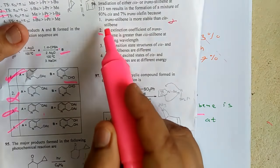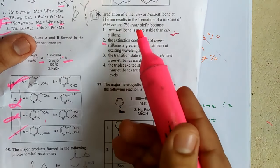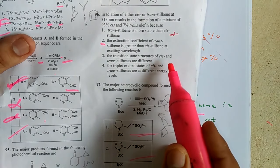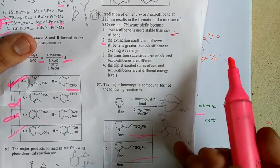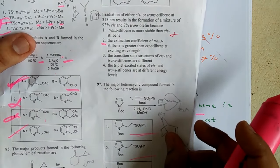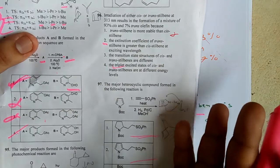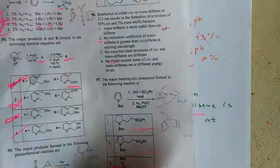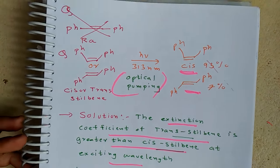Other options are less relevant: trans-stilbene being more stable than cis doesn't directly explain this result; the difference in transition state structures is not applicable; and the triplet excited state requires sensitizers like benzophenone which are not mentioned. Therefore, the second option — higher molar absorptivity of trans-stilbene — is the most probable correct answer.